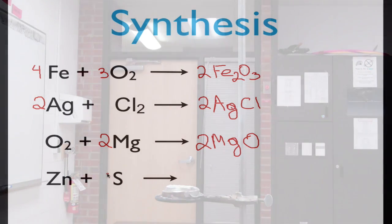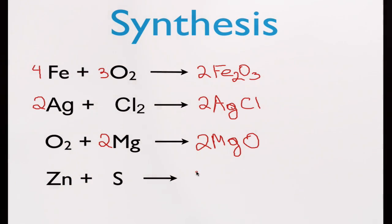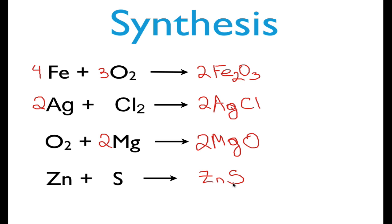For the synthesis reaction, we're going to have a single product, and that product is going to be a compound consisting of zinc and sulfur. Zinc forms a plus two charge — it's a transition metal. Sulfur forms a minus two charge, so we have a ratio of one to one. That equation is balanced: zinc metal reacting with sulfur to produce zinc sulfide.